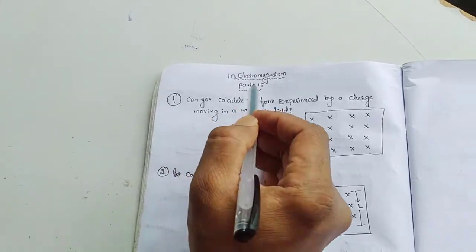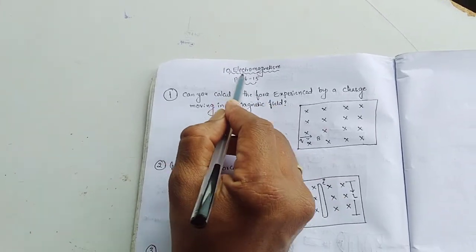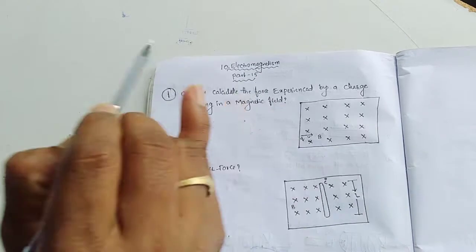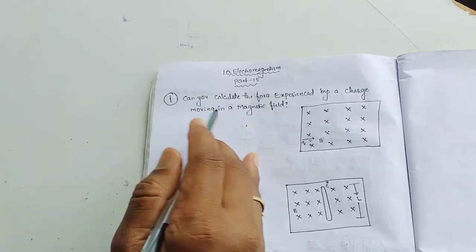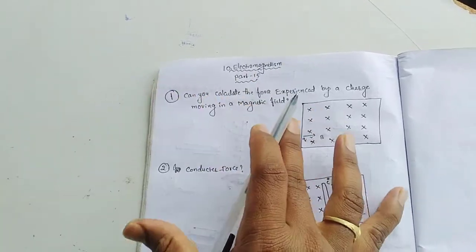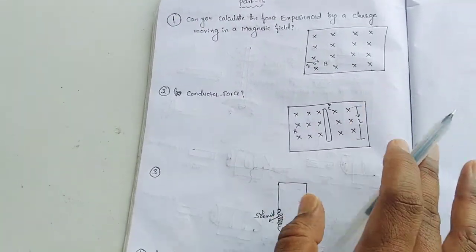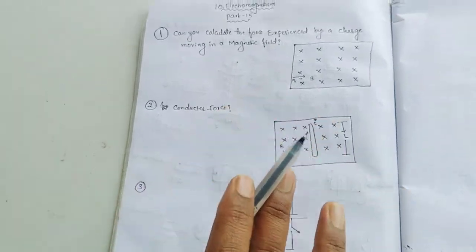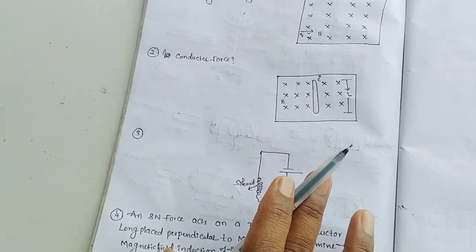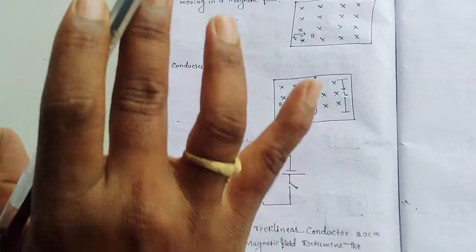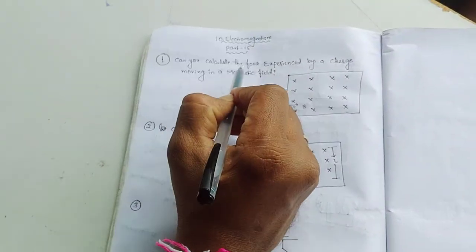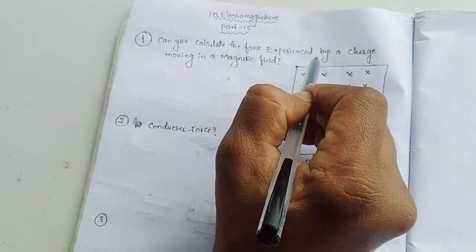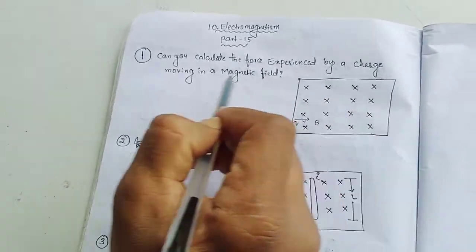Hi dear students, today we are discussing electromagnetism part two, lesson 15. We have three questions to discuss today.